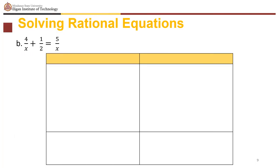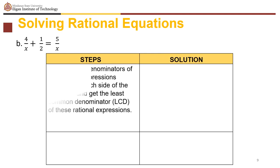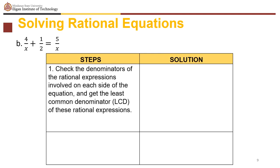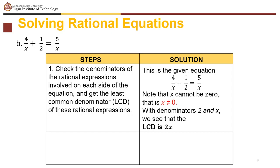For the second example: 4 over x plus 1 half equals 5 over x. Check the denominators. Note that x should not equal 0. The denominators are 2 and x, so the LCD is 2x.